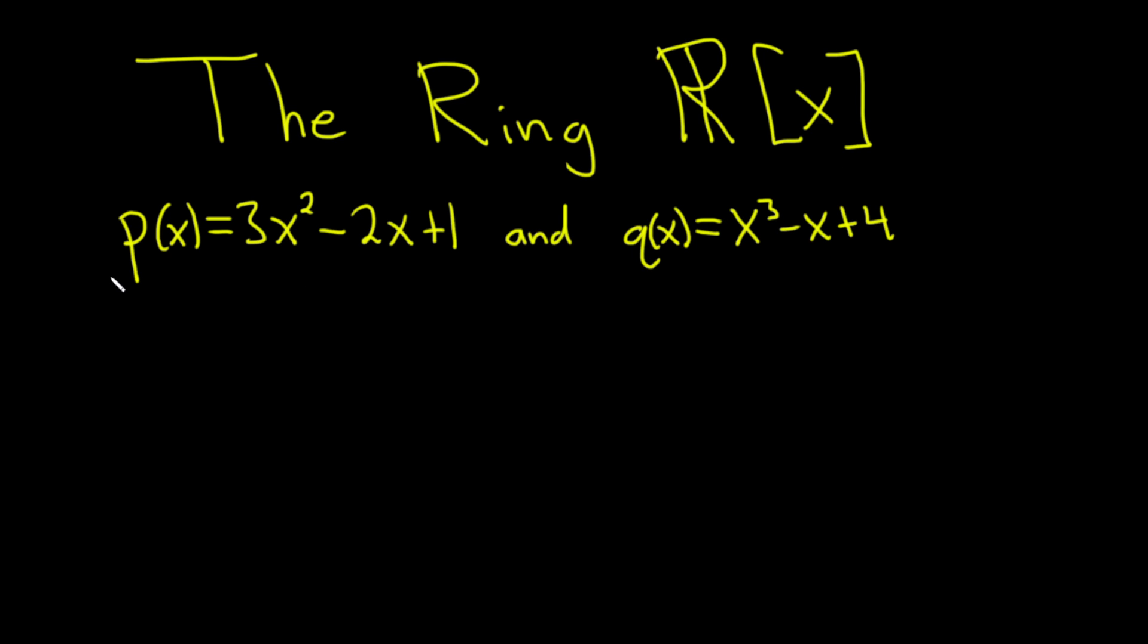So here we have two elements in this ring, p and q, and we're going to find the sum. So let's look at p plus q. p plus q of x is a new element, which can be defined by p(x) plus q(x).